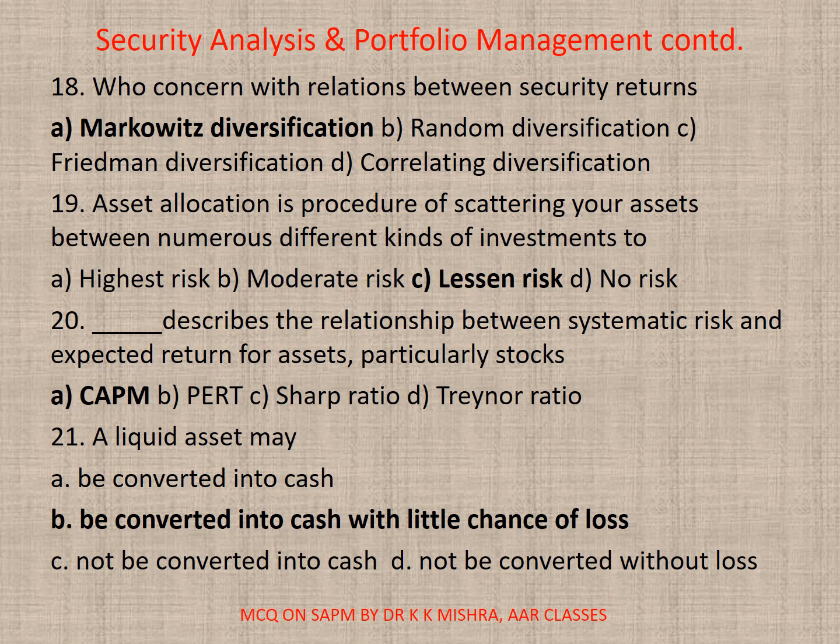Question 20: Dash describes the relationship between systematic risk and expected return for assets, particularly stocks. Options include: A. CAPM, B. Part, C. SR ratio, D. TR ratio. Correct option is A — CAPM.